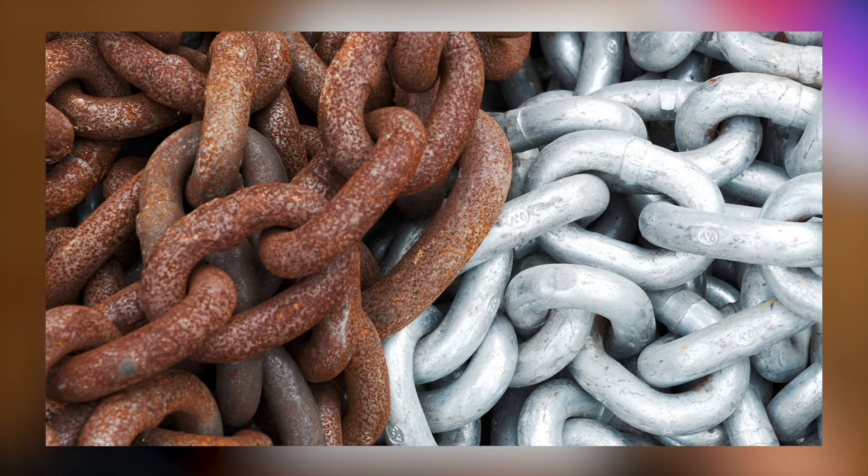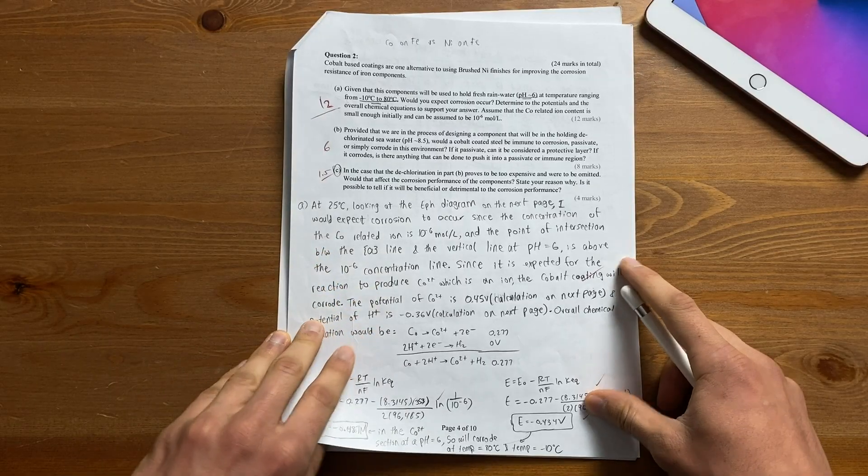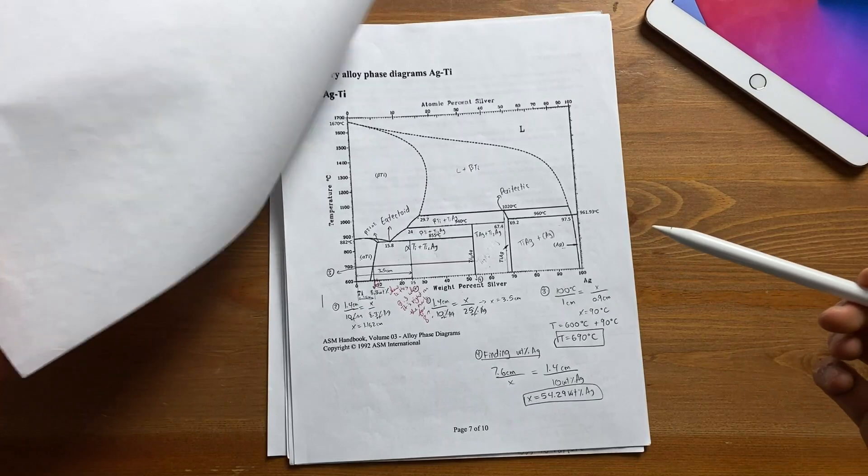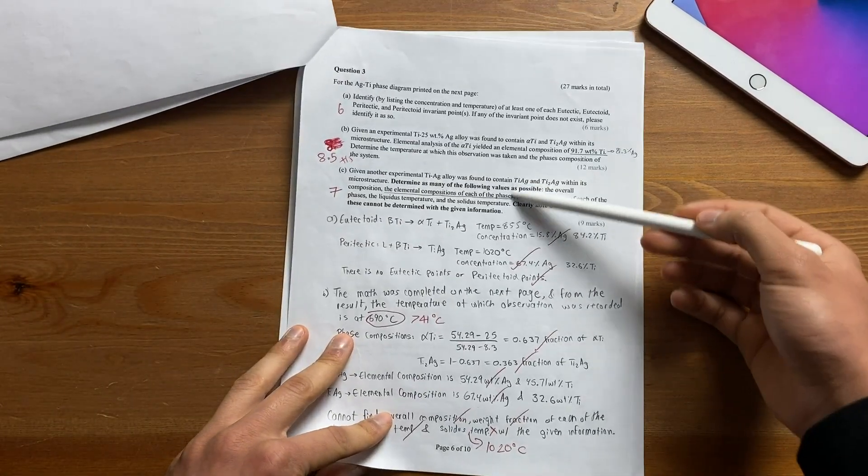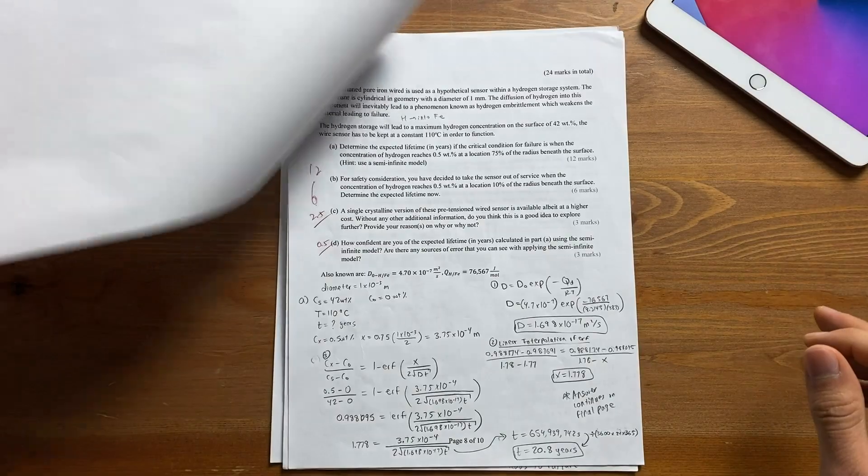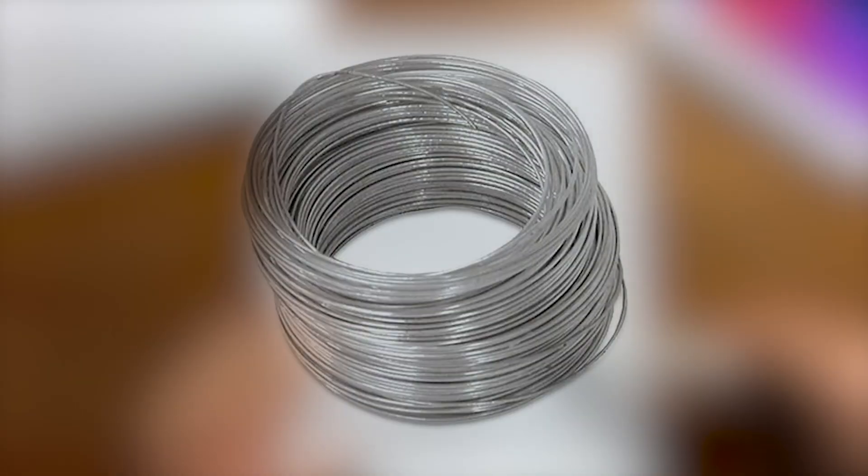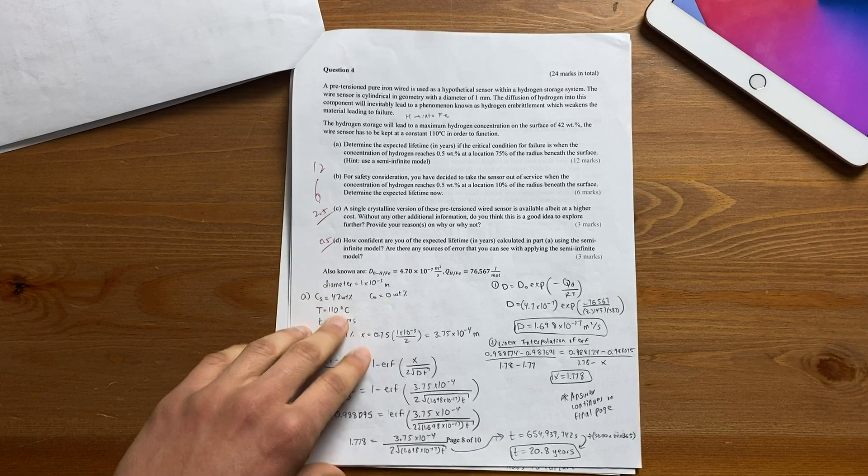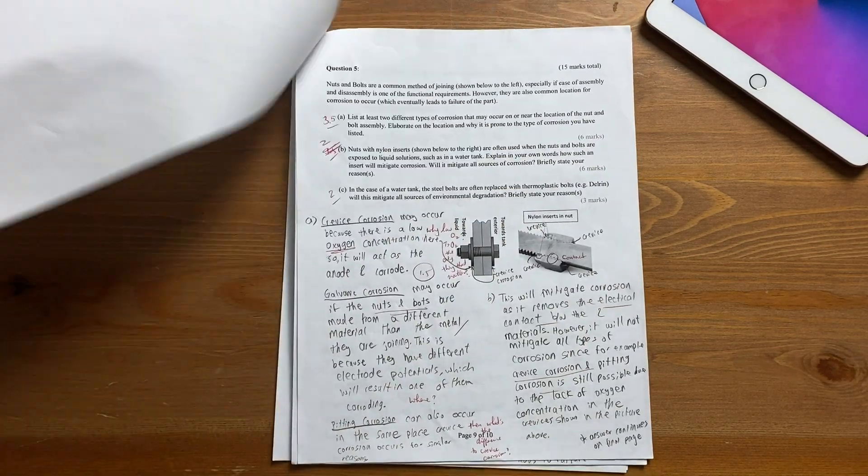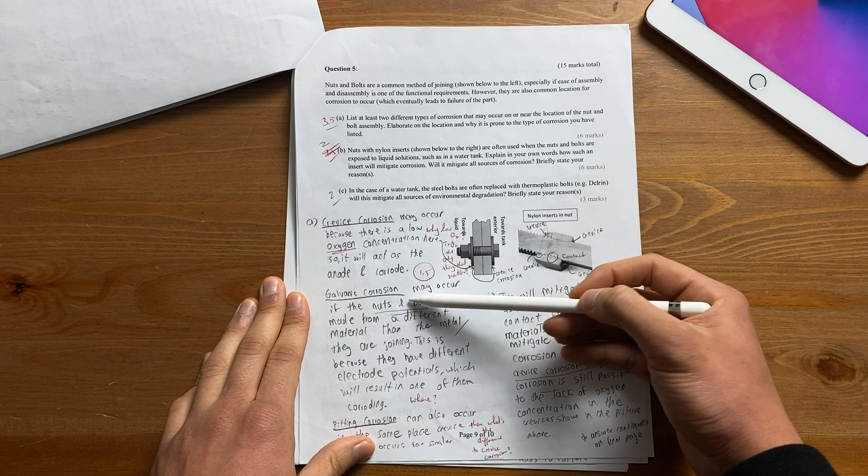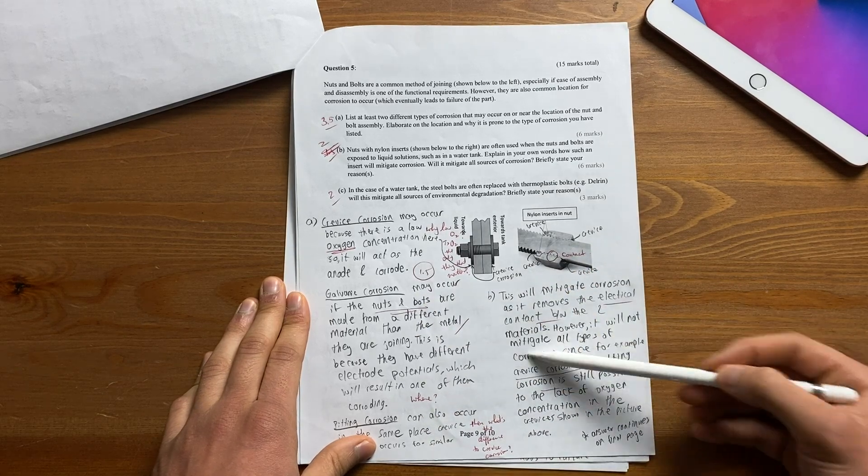The second question basically asked us: if you have a piece of iron and you don't want it to rust or corrode, would it be better to coat it with cobalt or nickel? To answer this I had to use this diagram, some basic math and explain my thoughts in words. The third question asked us to use this diagram which is known as a phase diagram of a compound made up of silver and titanium. We were expected to use this diagram to discuss how the material would react under certain environmental conditions. The fourth question told us that we have a piece of iron wire and based on the environment it's in, how long do we expect this wire to last? Luckily the solution wasn't too wordy and just had to use a basic equation to estimate the lifetime. Finally the last question asked us to discuss several ways that nuts and bolts can corrode over time and what we can do to prevent corrosion from happening.